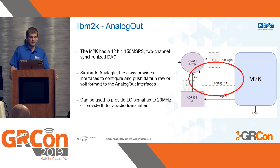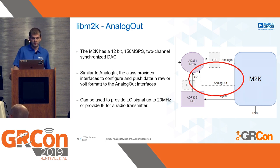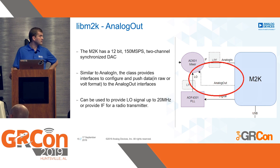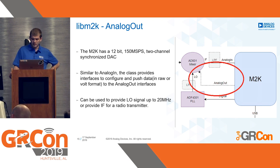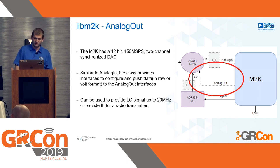The analog output is the interface to the M2K's 150 mega samples per second two-channel synchronized DAC. Similarly to the analog input, it provides easy-to-use methods to push data to the DAC, convert data from raw to volts, and handle different configuration options. It can be used to provide a local signal for up to 20 megahertz, and if you want to build a radio transmitter, you can use it to provide an intermediate frequency.